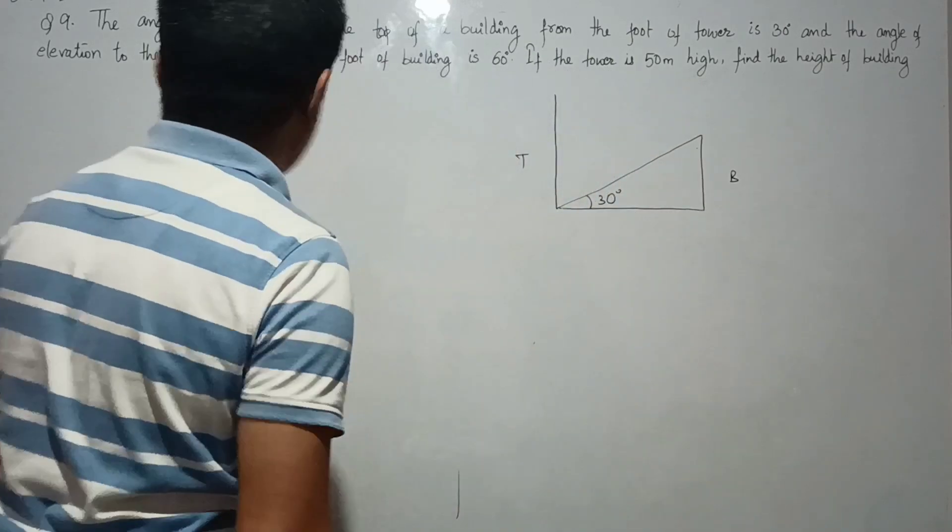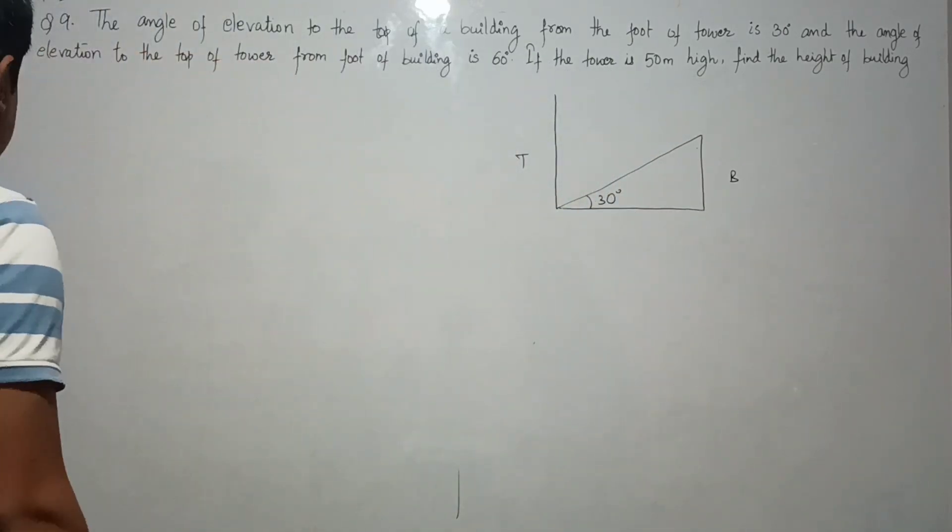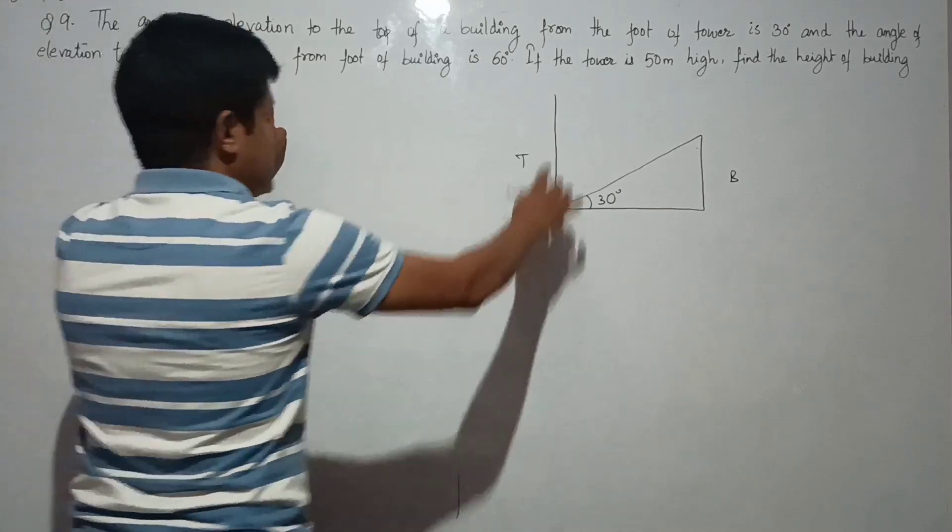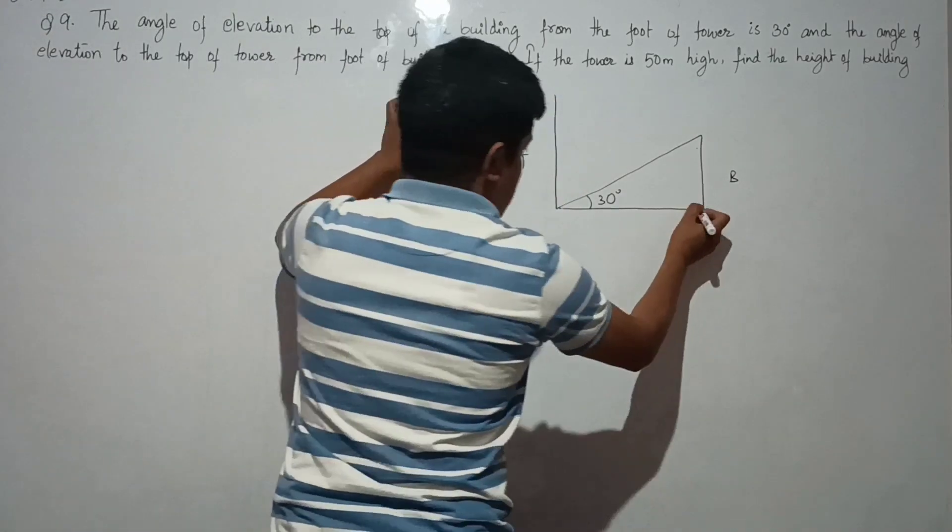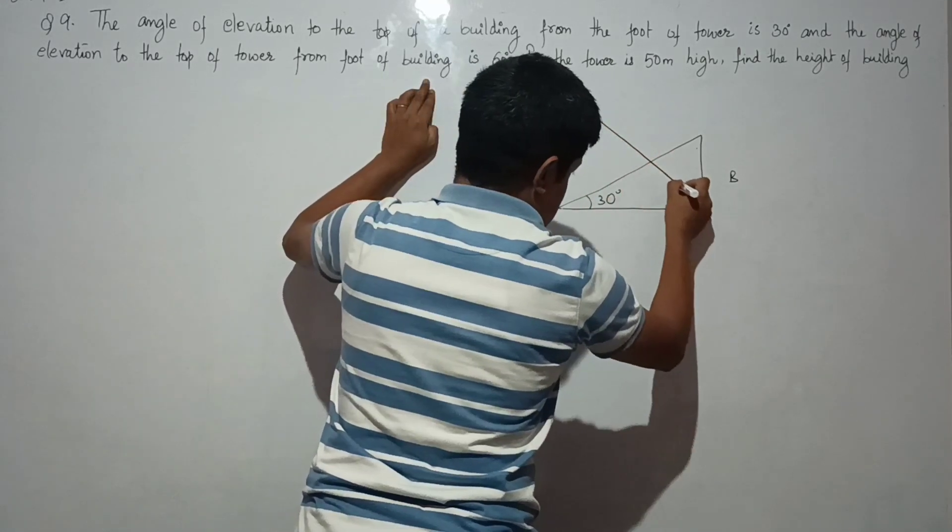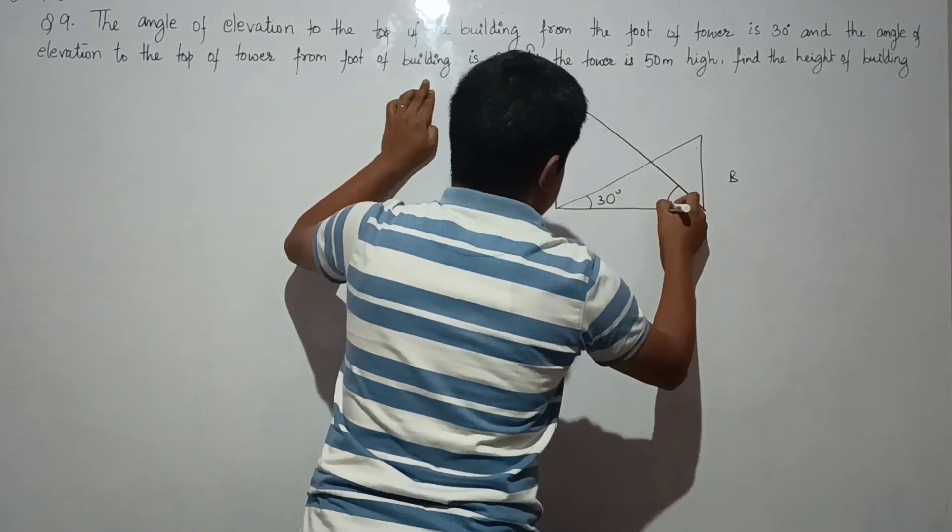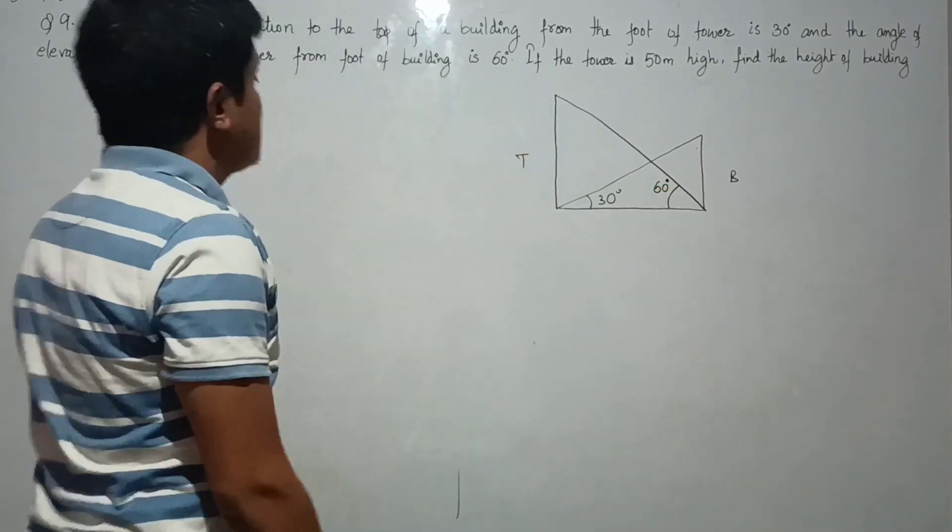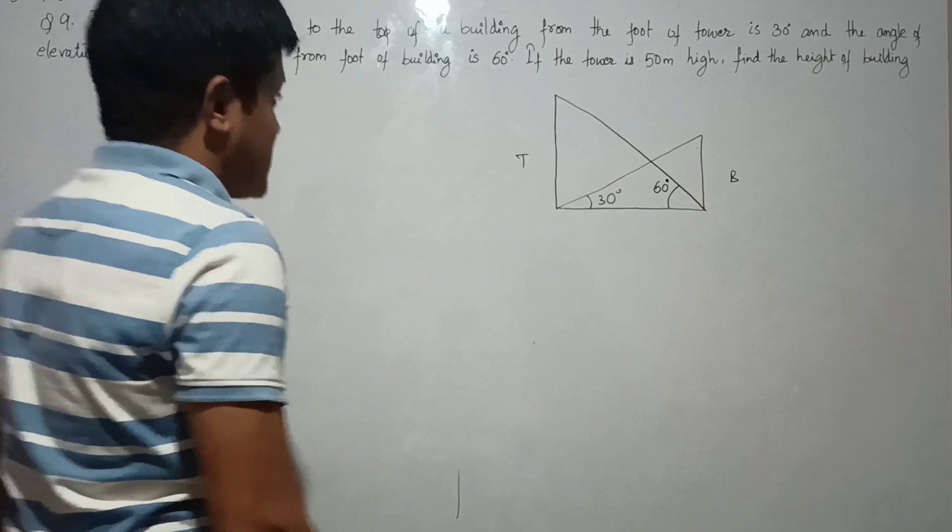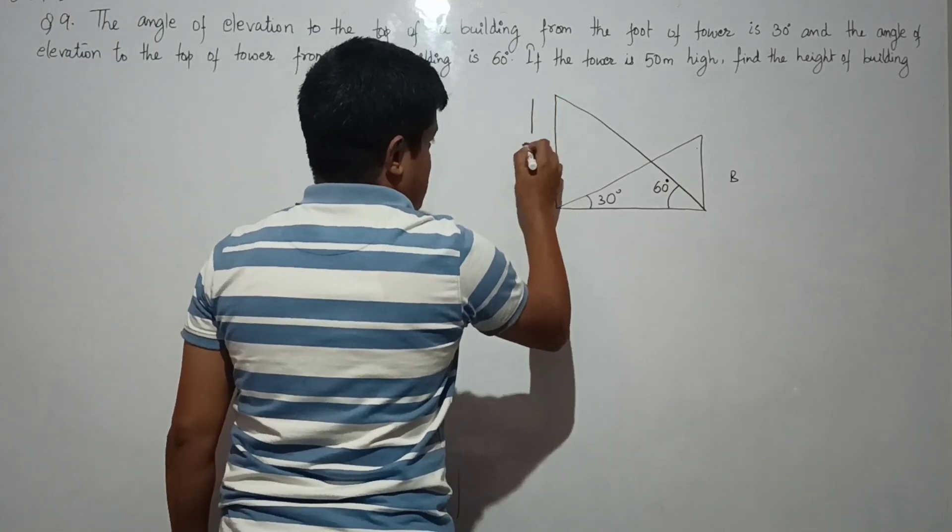from the foot of building—the angle of elevation is 60 degrees. If the tower is 50 meters high, so the tower height has been given, so let